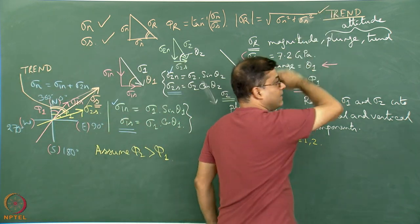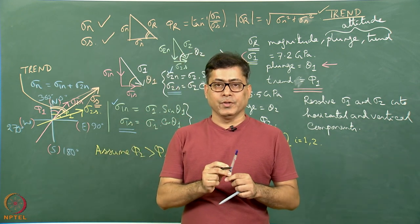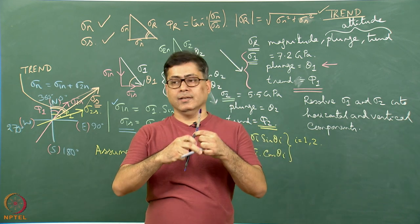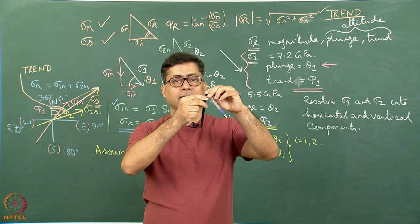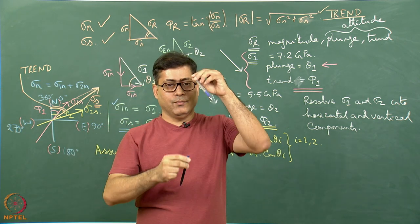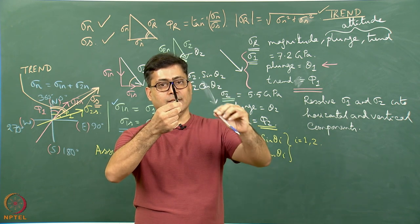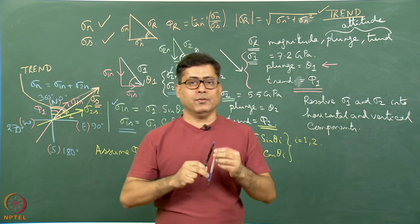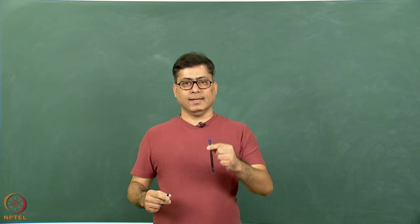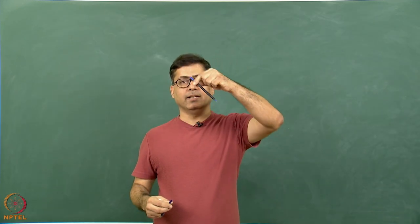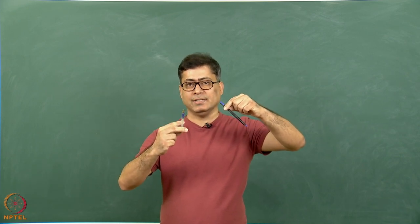We started with the case where both stresses act in the downward direction. Now, what will happen if one acts downward and another acts upward? We are now dealing with a case where one stress is acting in the down-plunge direction and another given stress is acting in the up-plunge direction. How do we find the resultant stress?